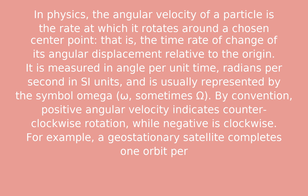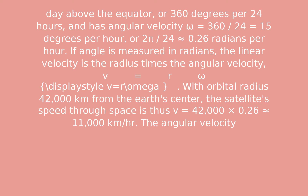For example, a geostationary satellite completes one orbit per day above the equator, or 360 degrees per 24 hours, and has angular velocity omega equals 360/24 equals 15 degrees per hour, or 2π/24 approximately equals 0.26 radians per hour.